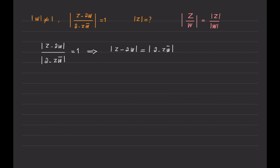A common trick when working with absolute values is to use the formula that if you have the absolute value of a complex number z squared, this equals z multiplied by the conjugate of z. Because we have a power of 2, it motivates us to raise both sides to the power of 2. This gives absolute value of z minus 2w squared equals absolute value of 2 minus zw bar squared.